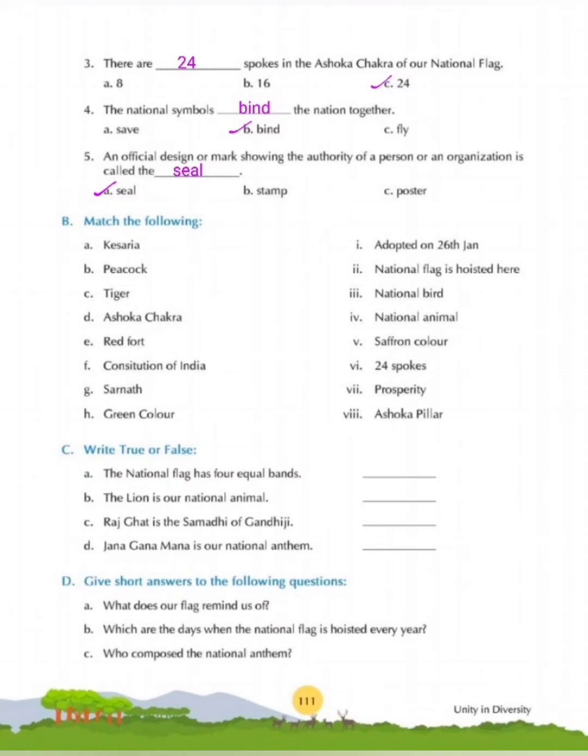F — Constitution of India: It was adopted on 26th January. G — Sarnath: The Ashoka Pillar is located in Sarnath, which is a historic place in Varanasi. H — Green color: Green color signifies prosperity.